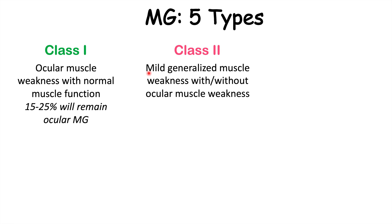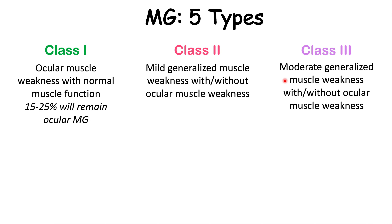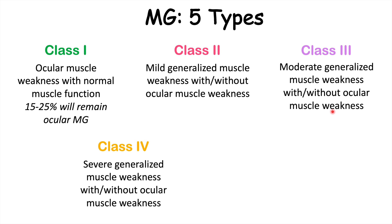Class two is where there is mild generalized muscle weakness with or without ocular muscle weakness. Class three is moderate generalized muscle weakness with or without ocular muscle weakness. Class four is severe generalized muscle weakness with or without ocular muscle weakness. And class five is where the patient requires intubation.